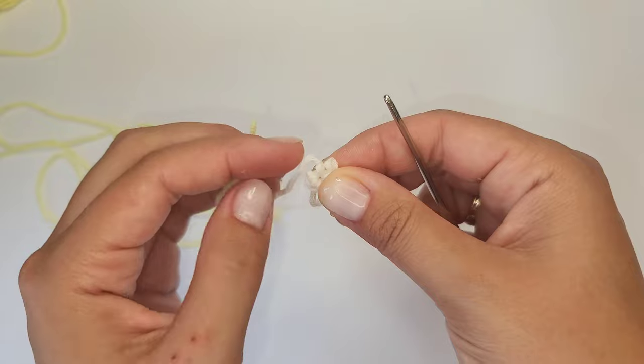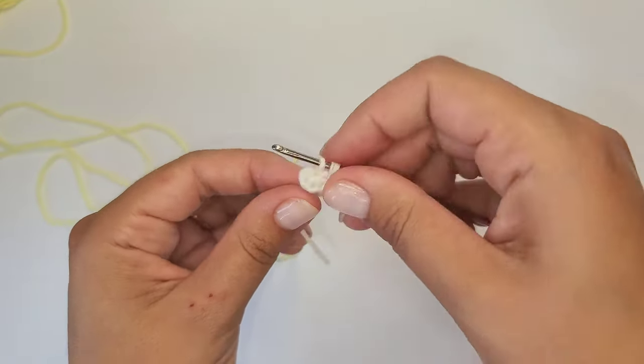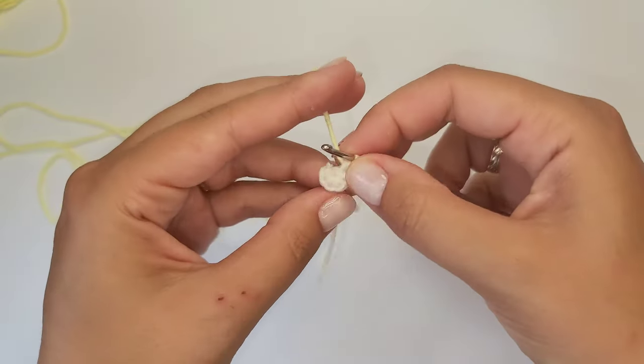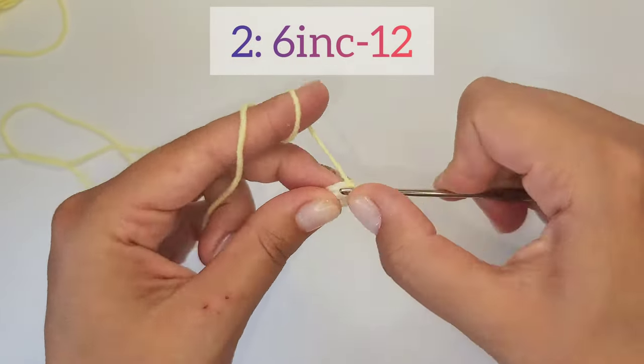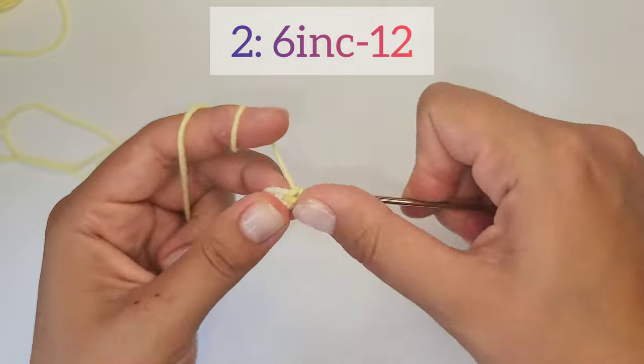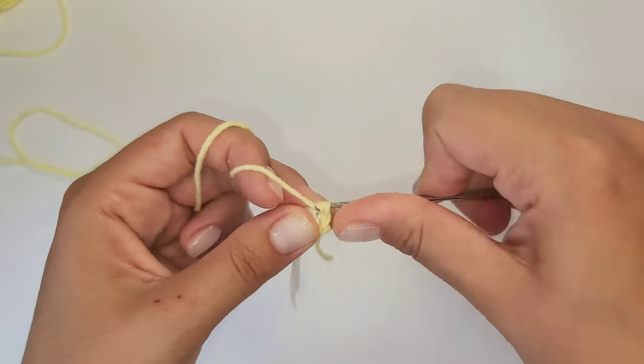Change the color in the last stitch of the first round and continue crocheting. 6 increases for round 2. That means you need to crochet 2 single crochet stitches in each stitch of the first round.